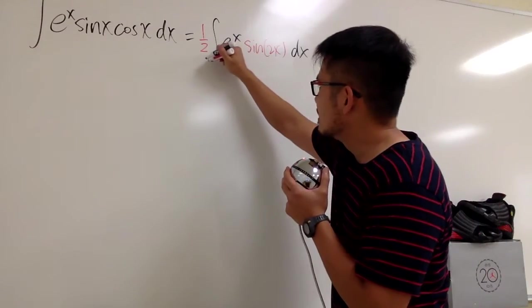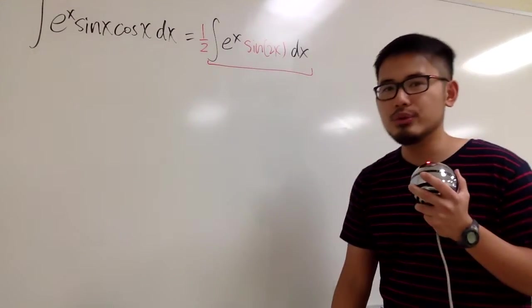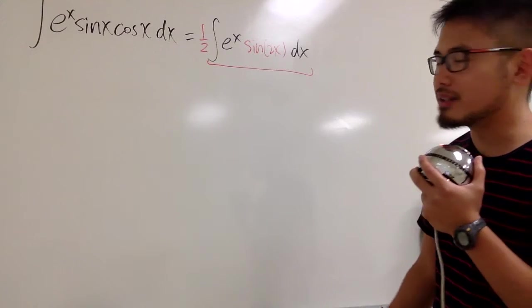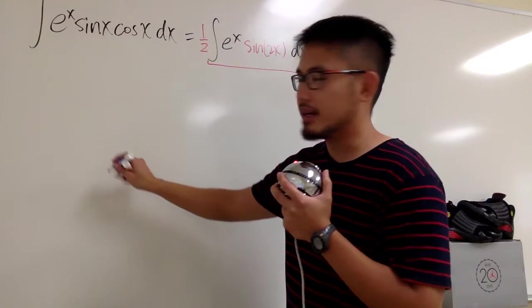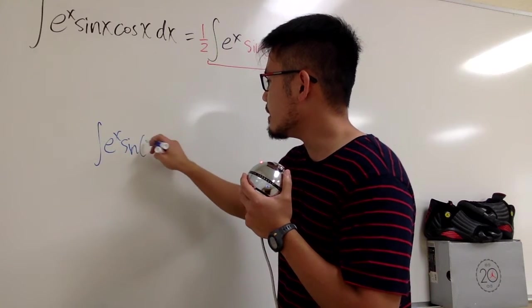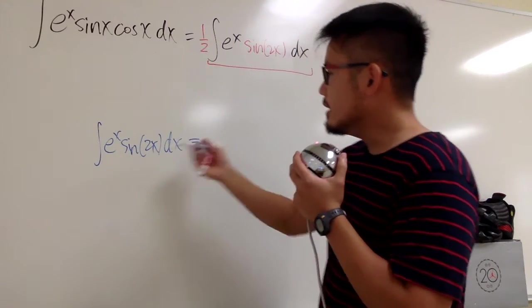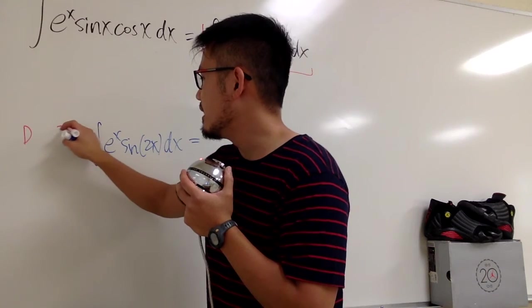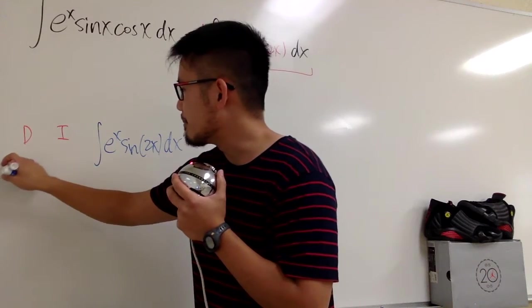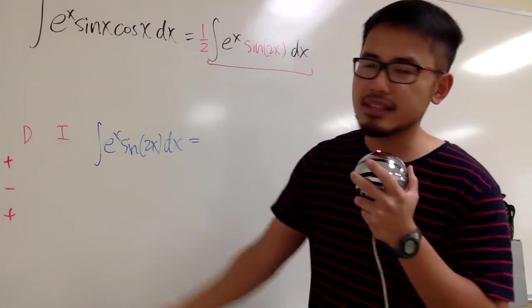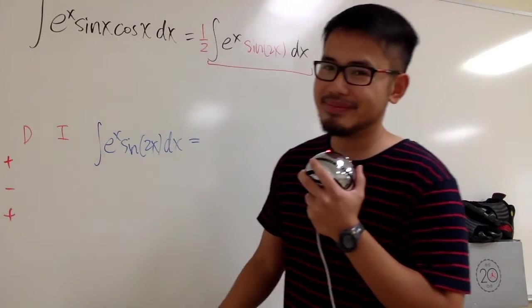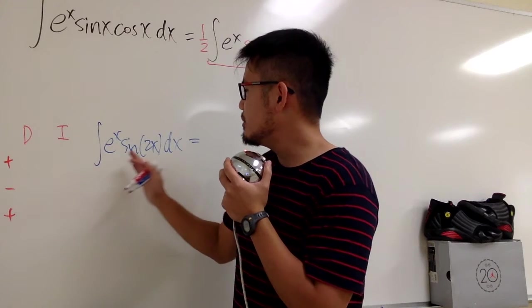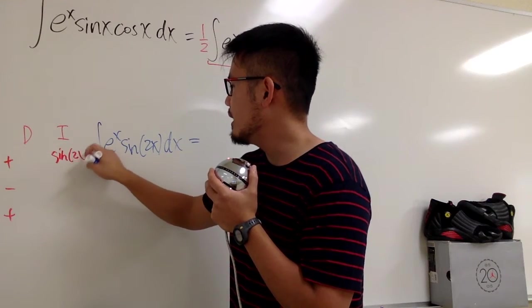Now we focus on this integral: the integral of e to the x times sine of 2x. To do this, I'm going to do it separately using integration by parts with the DI method. We have the D and I columns. Set up a plus, minus, plus, minus on the side — the signs alternate. Three rows will be enough. I'll pick sine of 2x to be integrated, and differentiate e to the x.